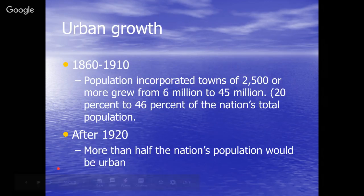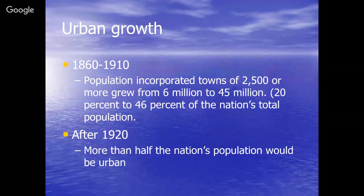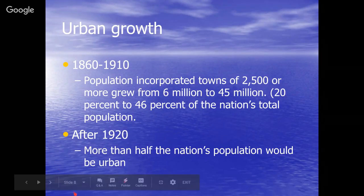In raw numbers, over a 50-year period from 1860 to 1910, the population in incorporated towns grew from 6 to 45 million. By 1920, for the first time, city dwellers outnumbered rural dwellers — almost 50 percent of the entire population had become urban.